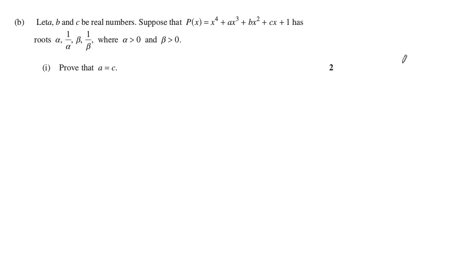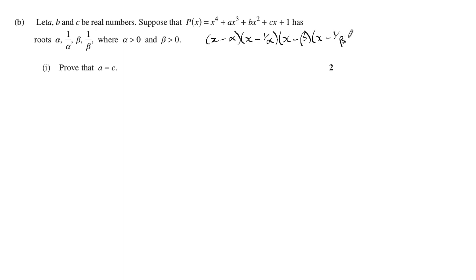Part B. If you get confused about which coefficient corresponds to the sum of the roots and which one is the product of the roots, what you can do is say: if it has these roots, then you can factorize it like this, and then look at what coefficients you get when you expand it.